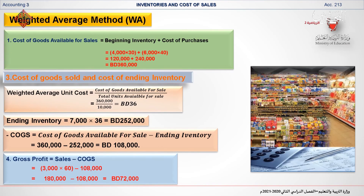The fourth requirement is to calculate the gross profit, which equals sales minus cost of goods sold. Sales equal 3,000 units multiplied by the selling price of 60 BD per unit. Subtracting the cost of goods sold of 108,000 BD, the gross profit equals 72,000 BD.